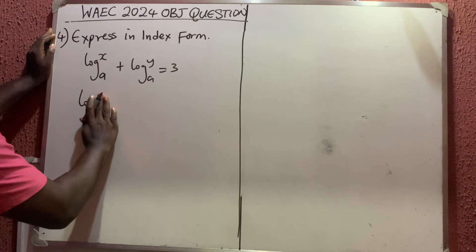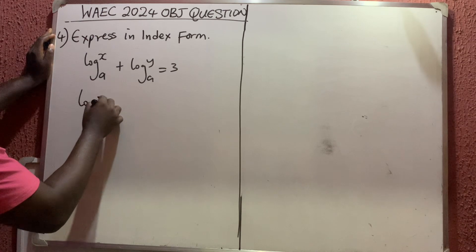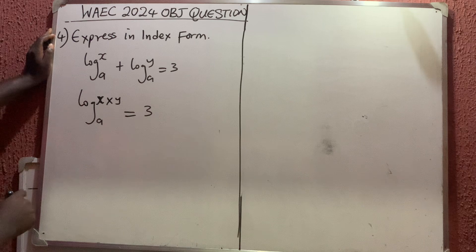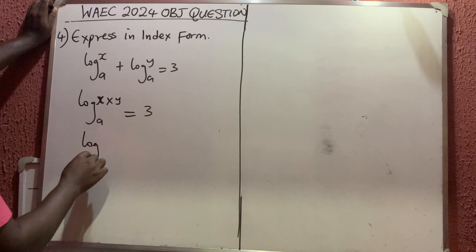So I'm going to have that this is x times y, which is equal to 3. And we can have that x times y is xy, so I'm having that this is log xy base a equals 3. Now, the next thing we're going to do is solve this in two ways.